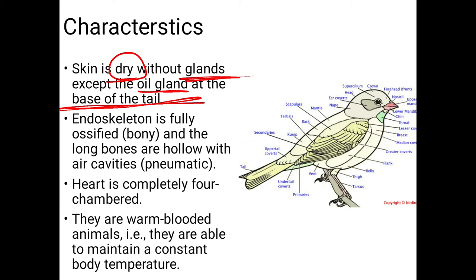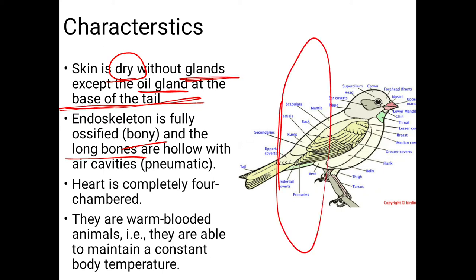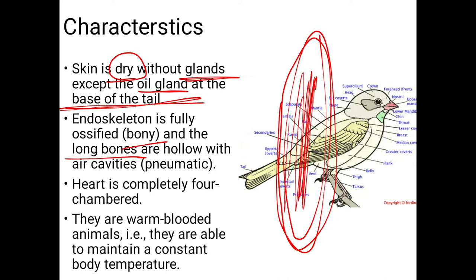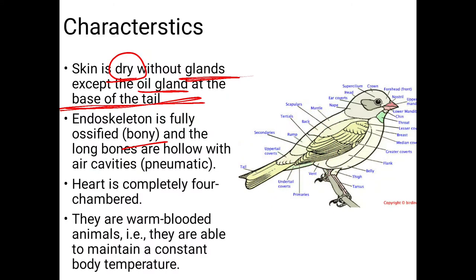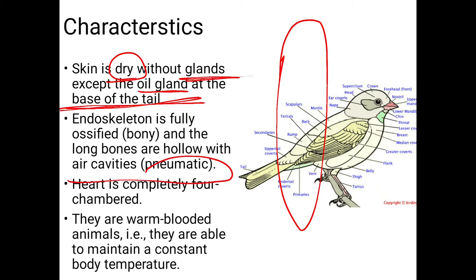The endoskeleton is made from bones which are hollow. These hollow bones reduce weight, helping the bird fly. Along with this, they have a four-chambered heart — a pneumatic heart similar to humans, with two auricles and two ventricles.